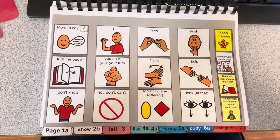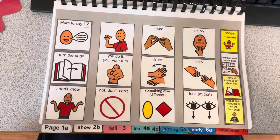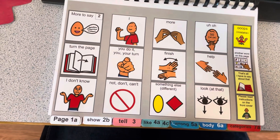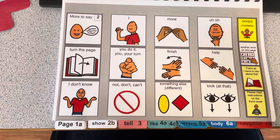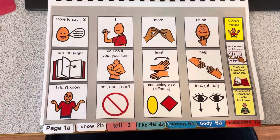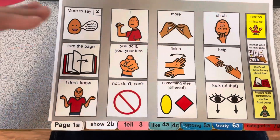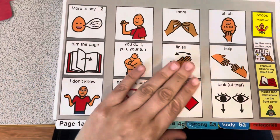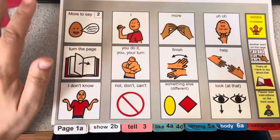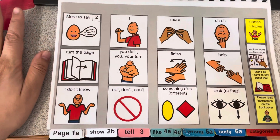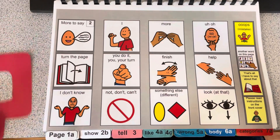Here's another video about the different levels of modeling with partner assisted scanning with POD. This is a part model. A part model is when we kind of just show the links, show the pathway, and then we get to the page that we want. We actually then scan on that page, so you don't scan the whole way through — you just show the pathway.